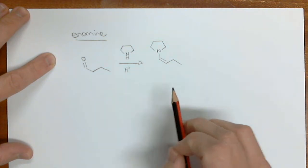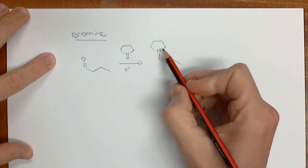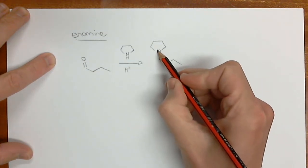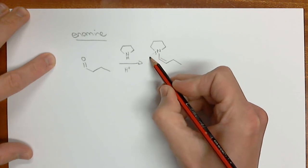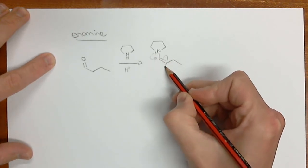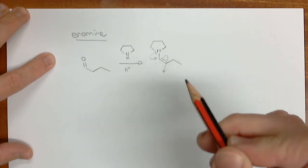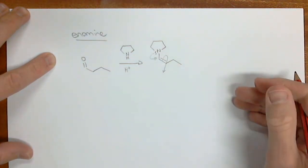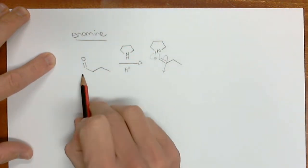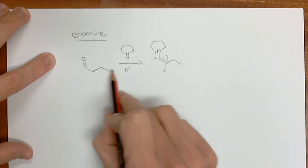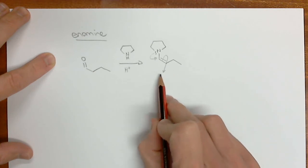But here's the important thing. Enamines look like an enol in that you've got this nitrogen with a lone pair of electrons that can kick in, and this could kick out, and therefore react with some electrophile. But enamines are very unreactive, so they do not react with the aldehyde component where they came from. But then, how is this a solution to the aldehyde problem? If they are so unreactive, why would we use them?